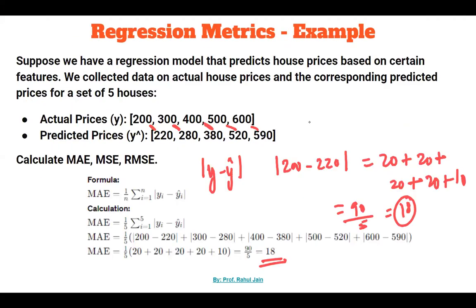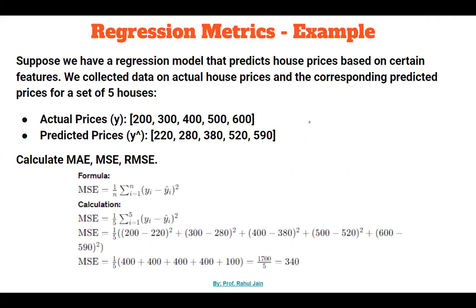So, Mean Absolute Error is 18. This means that when using this model to predict house prices in the future, we should expect an average difference of $18 between actual and predicted values.